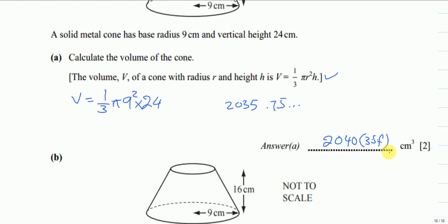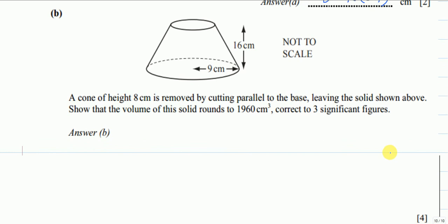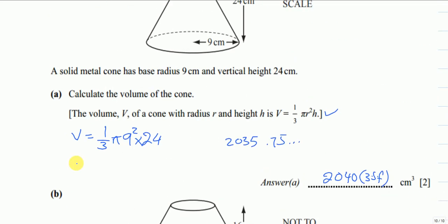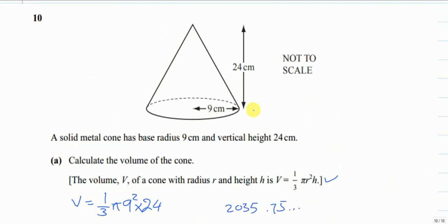Now let's look at part b. A cone of height 8 cm is removed by cutting parallel to the base, leaving the solid shown above. Show that the volume of this solid rounds to 1960 cm³ correct to three significant figures. So they have cut off this much of the cone.